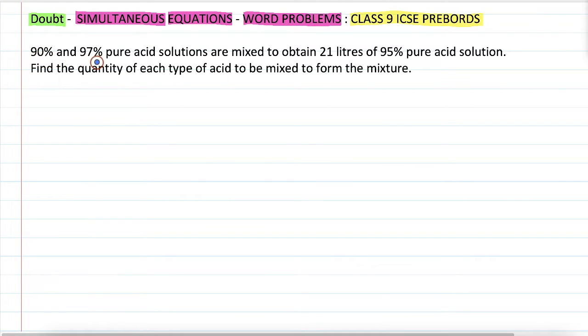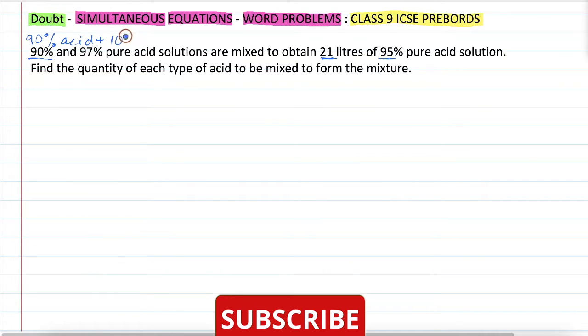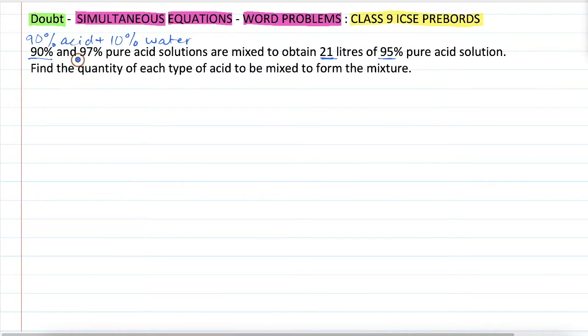90% and 97% pure acid solutions are mixed to obtain 21 liters of 95% pure acid solution. Find the quantity of each type of acid to be mixed to form the mixture. Let us understand: 90% acid means there will be 90% acid plus 10% water, and 97% pure acid means it is going to have 97% acid and 3% water, and 95% pure acid means 95% acid plus 5% water.